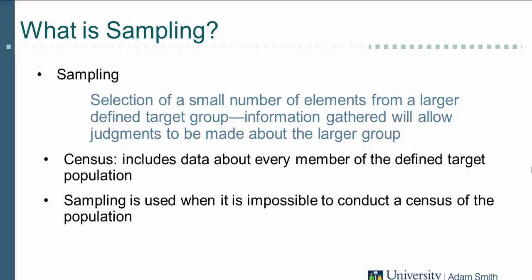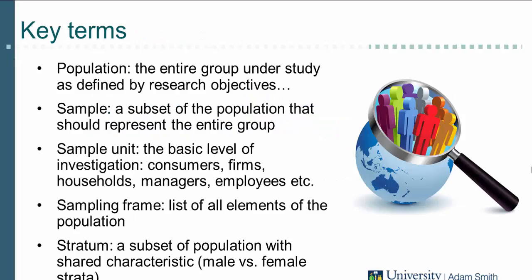To understand sampling, you first need to be familiar with some basic concepts, and the two most important concepts are population and sample. The term population refers to the entire collection of people to whom the findings are supposed to apply. The term sample is used to represent a subset of the population. The key consideration in sampling is that the sample represents the population accurately. An element or unit of analysis is a single entity in the population, for example, an individual consumer.